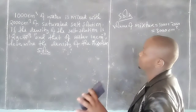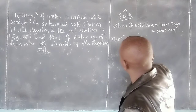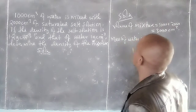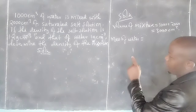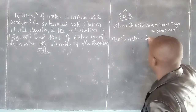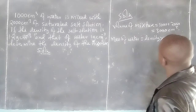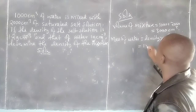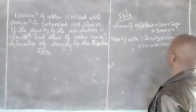It is important we get the mass of the mixture by finding the mass of the respective components. Mass of water is given by density times volume: 1 times 1000, giving us 1000 grams.